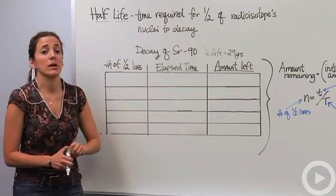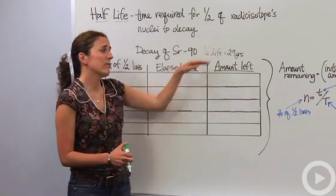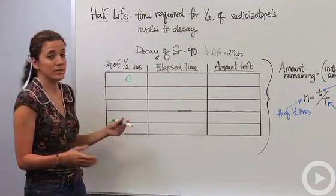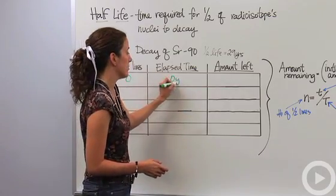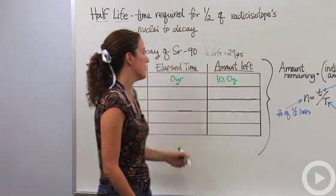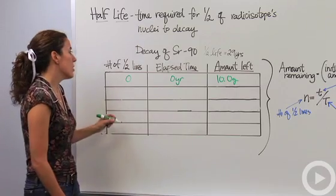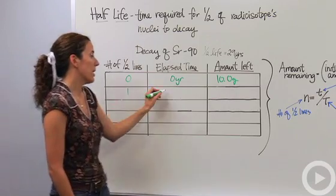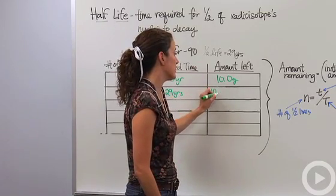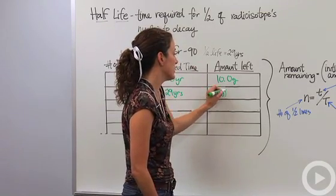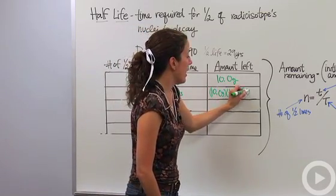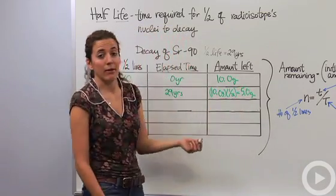So let's take Strontium-90 for example, it's a radioactive isotope, its half-life is 29 years. So originally if I have no time passed by, no years, so no half-lives, I have in my possession 10 grams of Strontium-90. So one half-life goes by and that's 29 years, so 29 years later, my 10 grams that I originally had, half of it is left as the definition of half-life states. So that means I have 5 grams of Strontium-90 left.